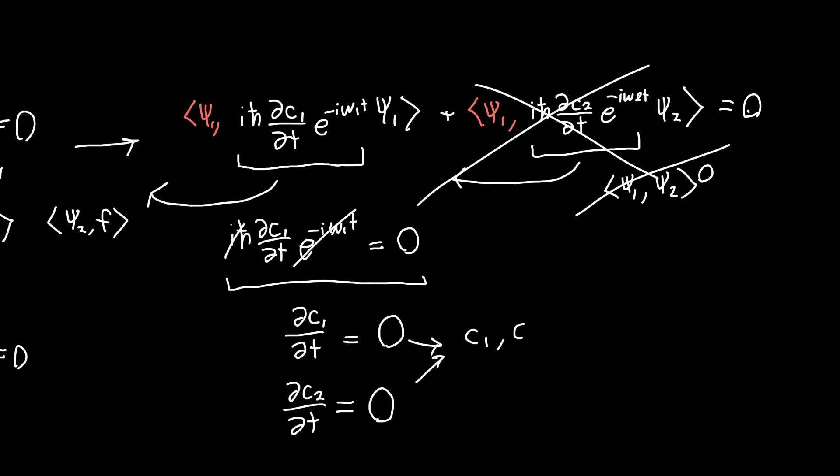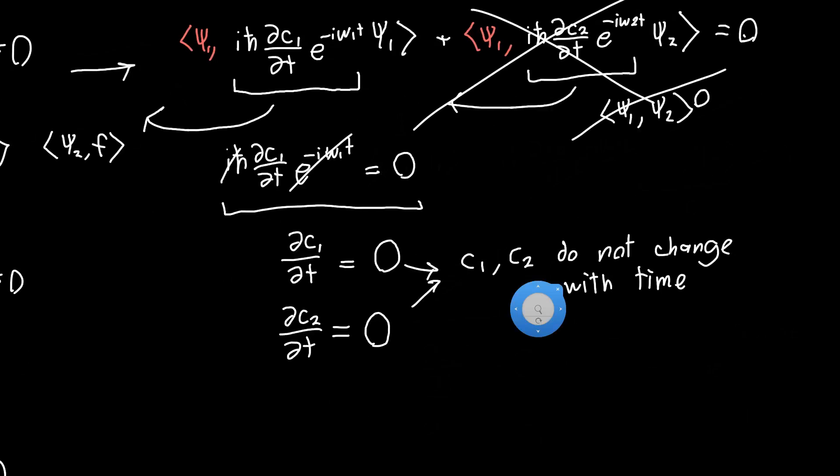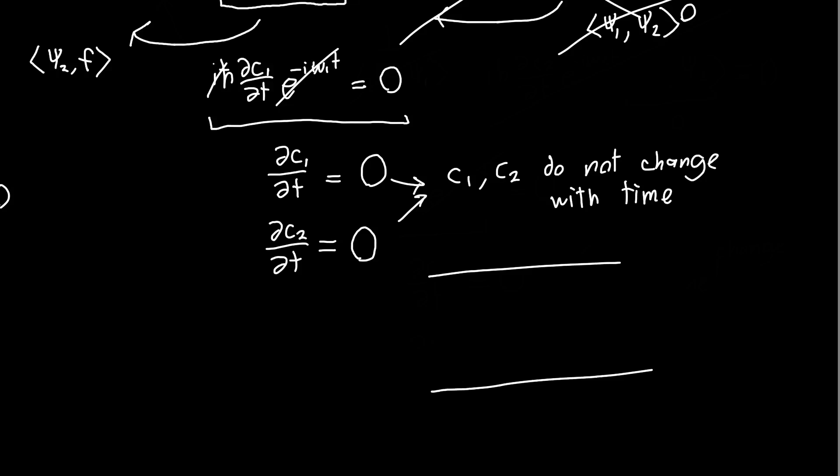And so c1 and c2 do not change with time. And so this was assuming that we didn't apply any electric field or any photons, which basically means if we've initially got an electron in state 1, so it's initially got energy 1, and we don't apply an electric field, so we don't apply any sort of perturbation, c1 is initially equal to 1. It will stay in this state forever according to this Schrödinger equation, because c1 and c2 are not functions of t. And I also should just mention that the probability that it's in state 1 is just the magnitude of c1 squared. Similarly, the probability that it's in c2 is just magnitude of c2 squared.